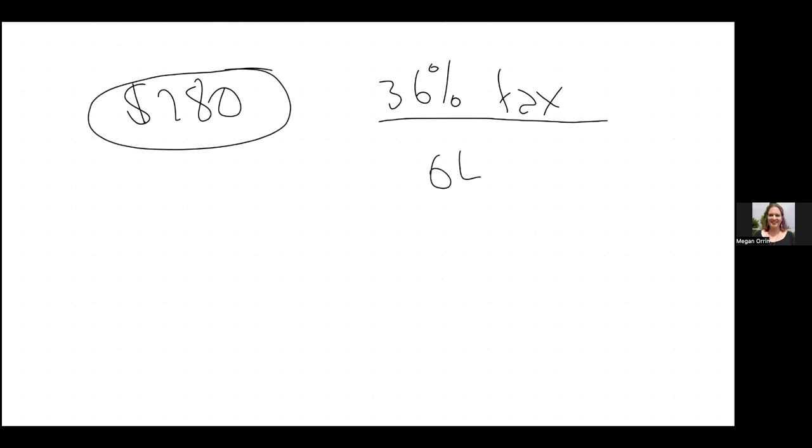So let's say that I earn $280 one day, but I have to pay tax. Let's say 36%. So 36% tax is a pretty average rate for Australia. If I'm paying 36% tax, how much of this do I get to keep? 64%, right? So if I'm paying 36% tax, I'm keeping 64% of my money. So what do I do with this number and this number to figure out how much I get to keep? Times 0.64.